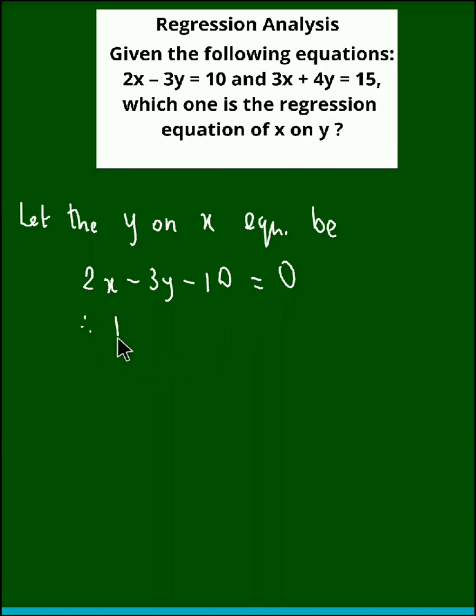Therefore from here we obtain b_yx, which is equal to minus of a by b, that is coefficient of x upon coefficient of y. So that's 2 by minus 3, which equals minus 2 by 3.